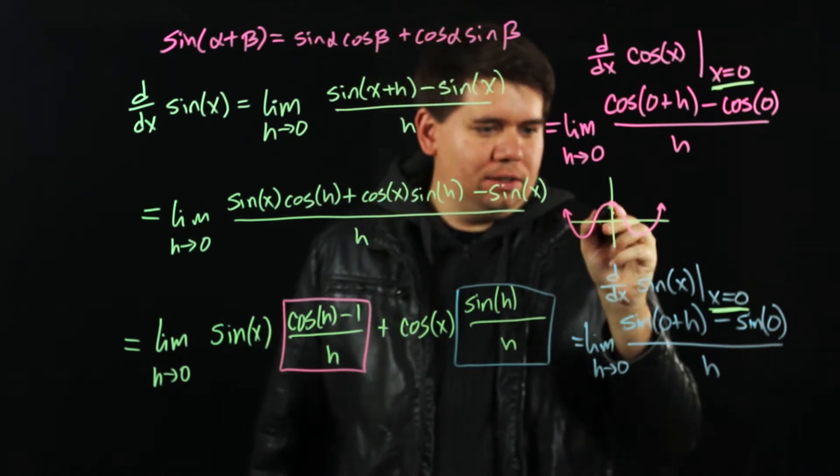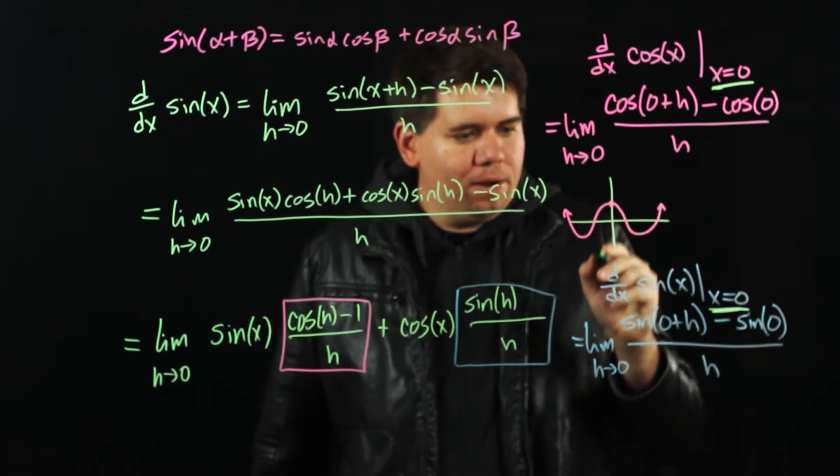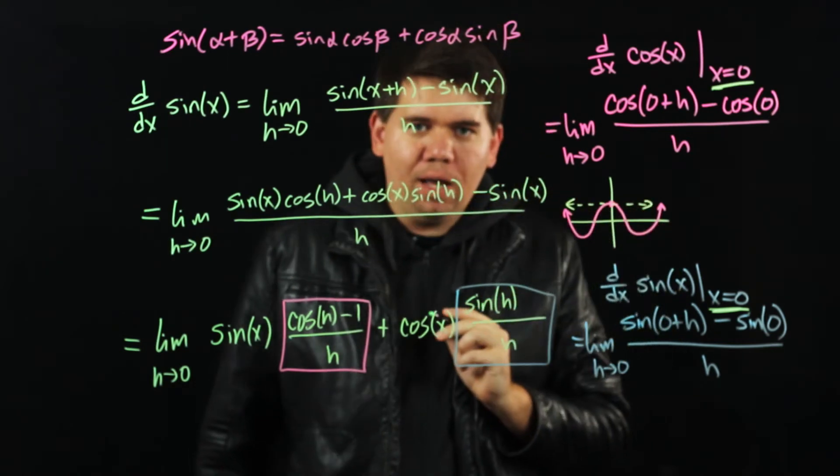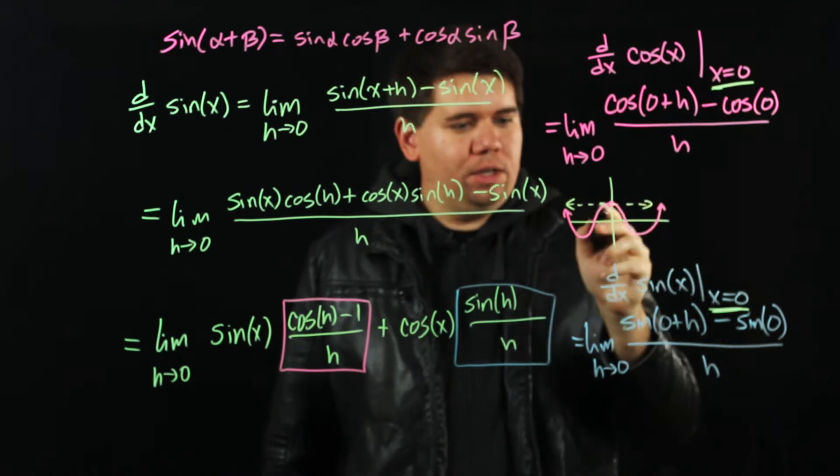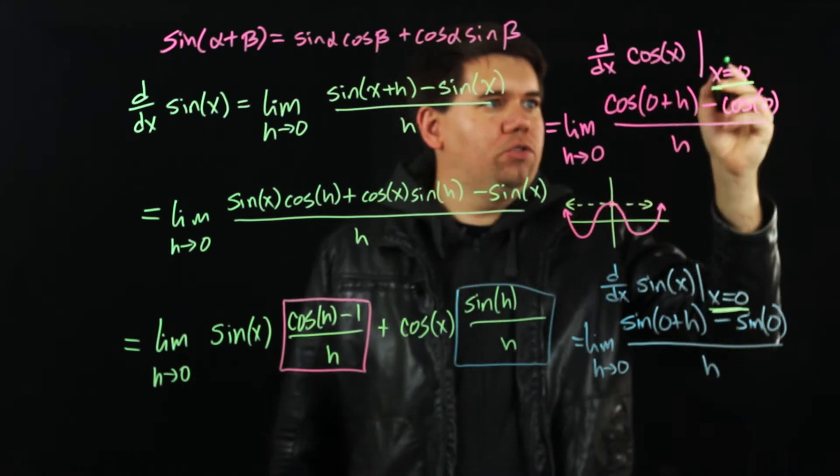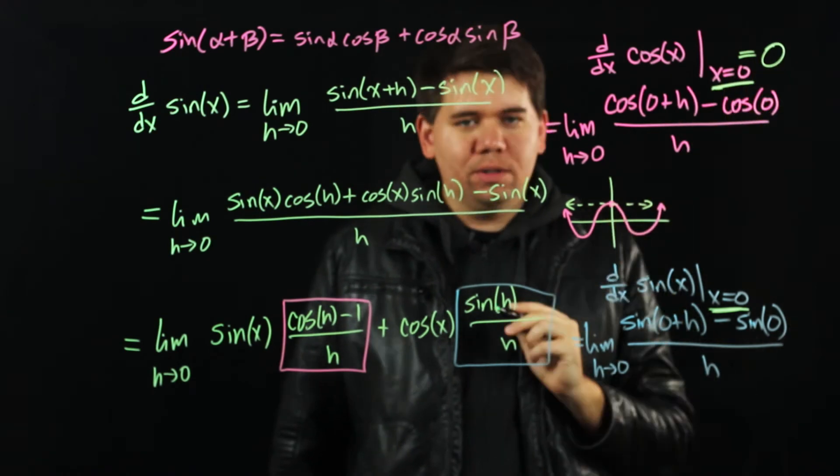Well the tangent line right here, it's at the top of this mound, the tangent line right there is just going to be a horizontal line. So at x equals 0, the slope of my tangent line will just be 0. This derivative will just come out to equal 0.